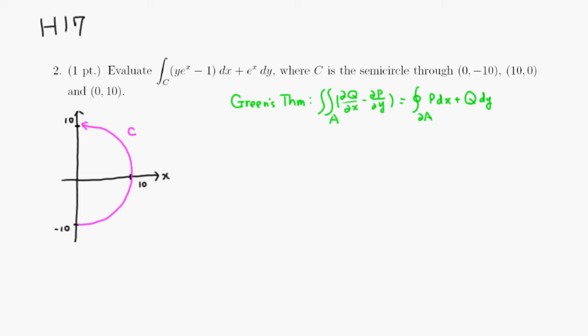So C is a semicircle. It goes from 0 negative 10 and goes all the way around this way, and then goes to 0, 10.